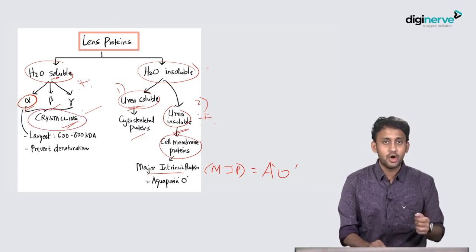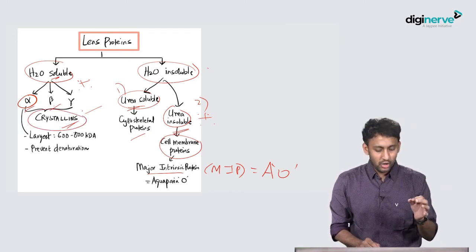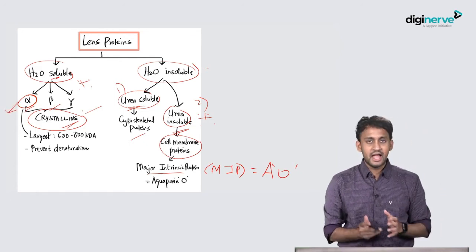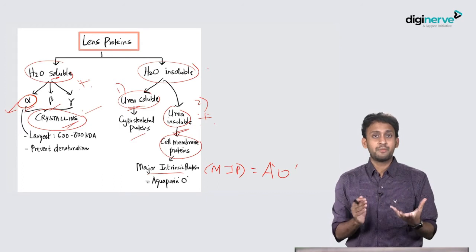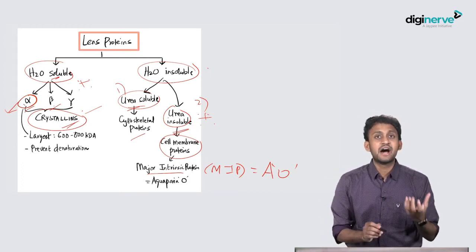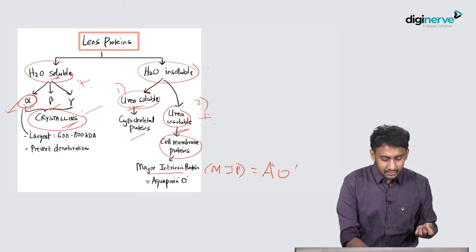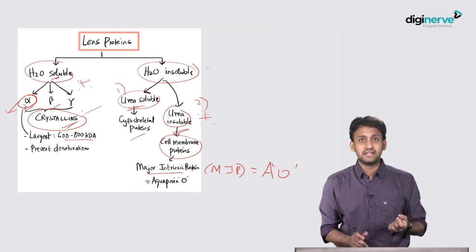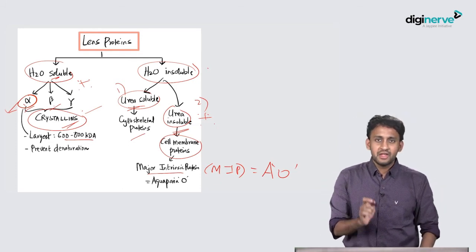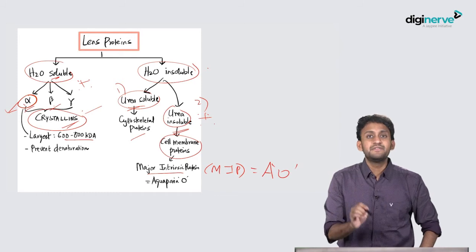The largest crystalline is the alpha crystalline. Alpha is the more predominant one, the more dominant. Alpha crystalline is 600 to 800 kilodalton, that's the weight of the alpha crystalline. This alpha crystalline is going to prevent denaturation.